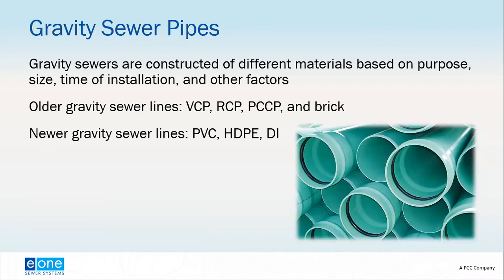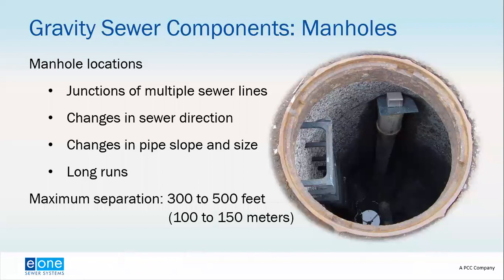Looking at sewer pipe materials: on older gravity sewers, you might see vitrified clay pipes, reinforced concrete pipe, or pre-stressed concrete cylinder pipe. For new gravity sewer, you generally see ductile iron pipe, polyvinyl chloride (PVC) pipe, or high-density polyethylene (HDPE) pipe. Manholes are a major component of gravity sewer systems — they connect multiple sewer lines and are required at any bend, change in direction, change in pipe slope or diameter, and at intervals not exceeding 300 to 500 feet on long straight runs.